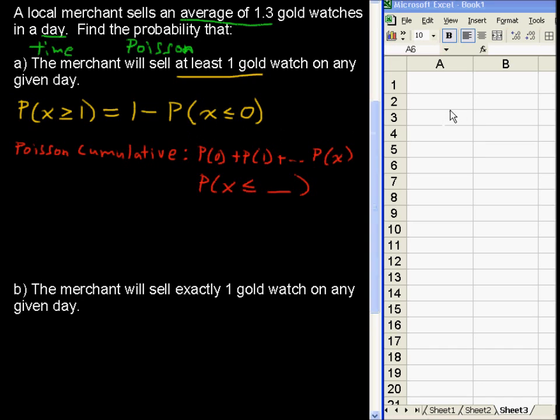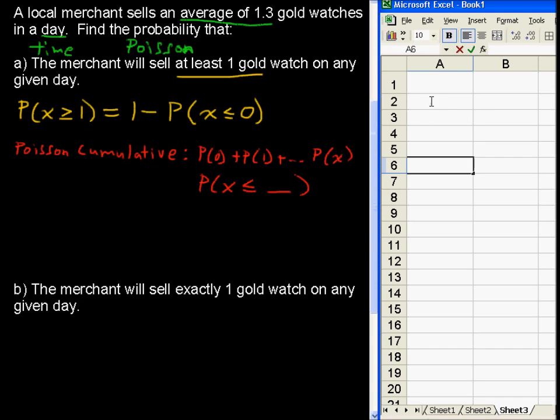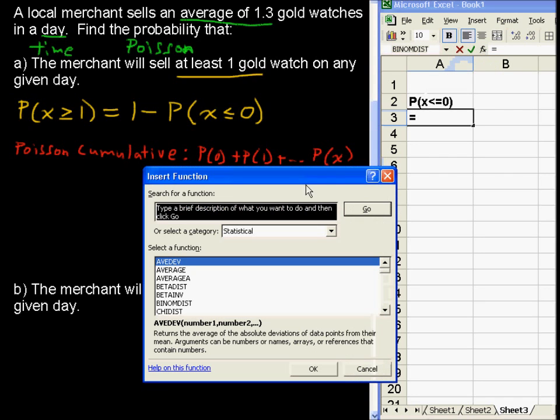Here's what I'm going to do. I'm going to put the probability that x is less than or equal to 0 right here. I'm going to use the Poisson distribution. I could just type equals Poisson. I'll show you the insert function just so we can do that.